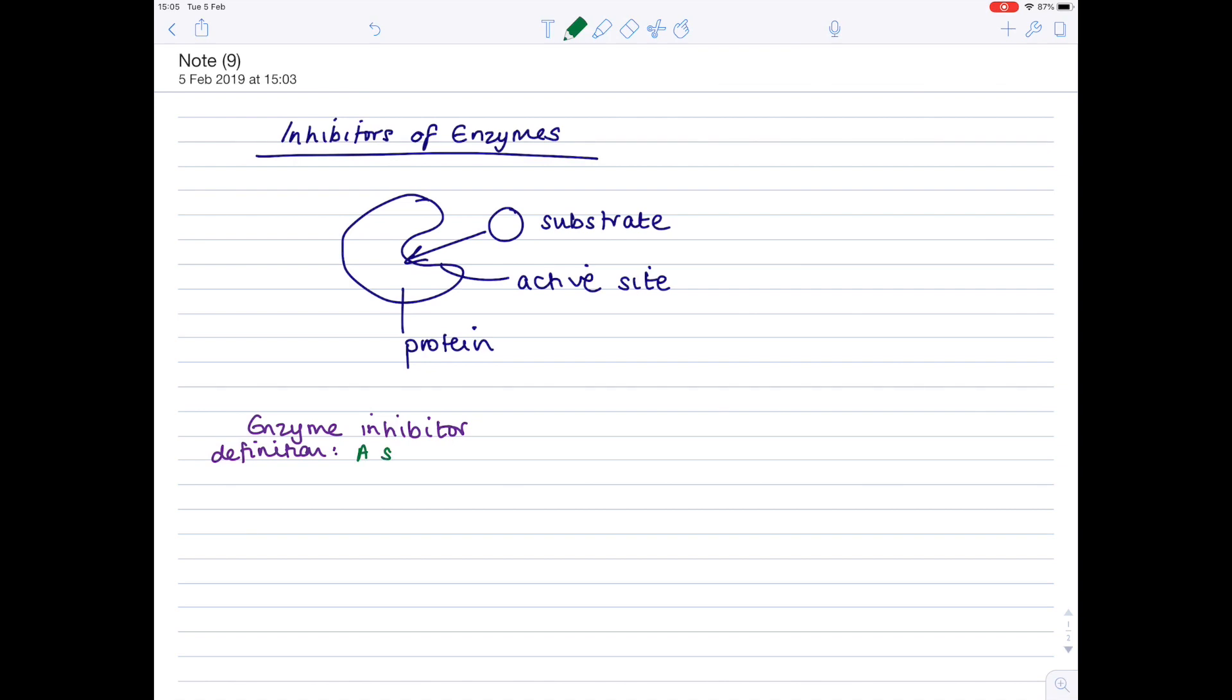It's a substance that slows the rate of an enzyme-controlled reaction. How does it work? We've looked up here to see how an enzyme actually acts. It acts on substrates which bind to the enzyme's active site. And obviously, if you can prevent the binding of the substrate to the enzyme, then you can slow the enzyme's activity.